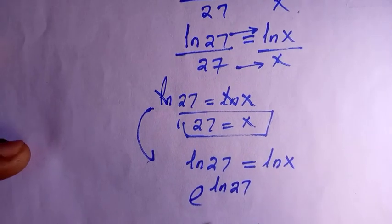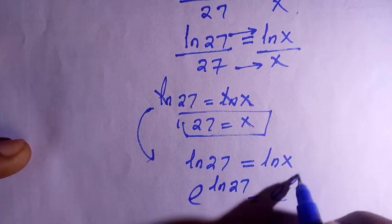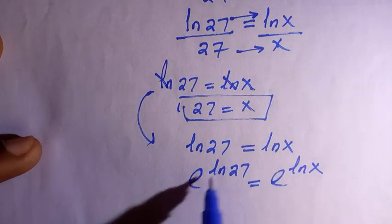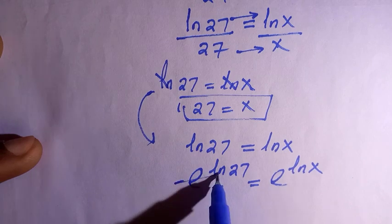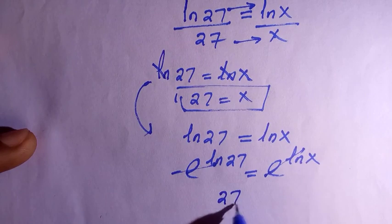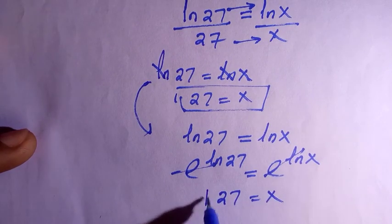By introducing exponents, we have e^(ln(27)) equals e^(ln(x)). e and ln, both of them are inverse to each other, so they cancel and we get x equals 27.